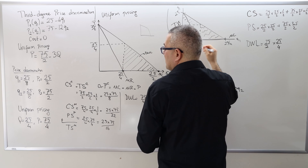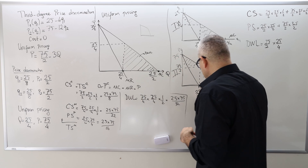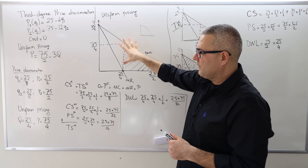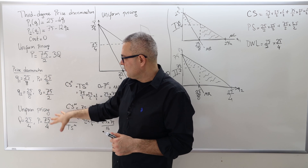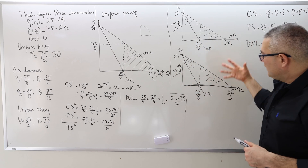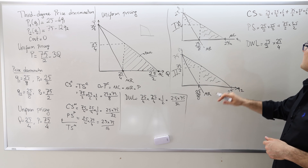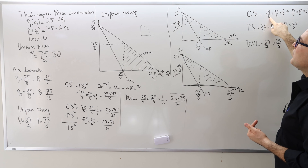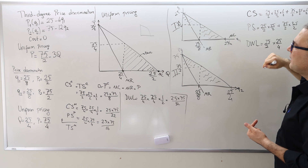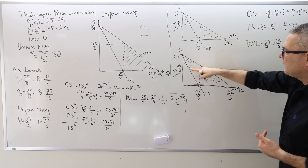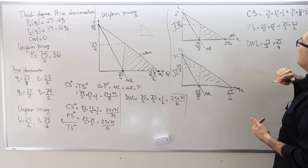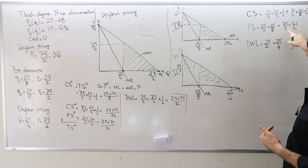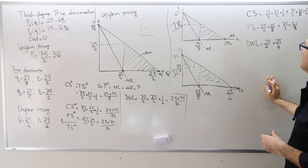Up until the uniform pricing section, nothing changes. But for the price discrimination section, I need to use the corrected quantity of 25/8. So the corrected consumer surplus is: (25/2) × (25/8) × 1/2 for group 1, plus (75/2) × (25/8) × 1/2 for group 2. The corrected producer surplus rectangle is: (25/2) × (25/8) + (75/2) × (25/8).